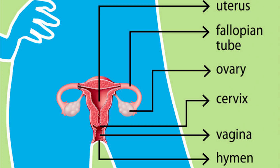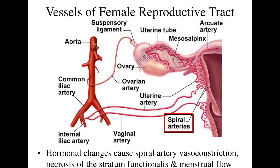The uterus or womb accommodates the embryo which develops into the fetus. The uterus also produces secretions which help the transit of sperm to the fallopian tubes, where sperm fertilize ova or egg cells produced by the ovaries.